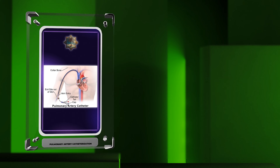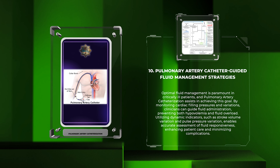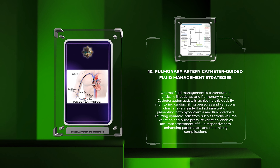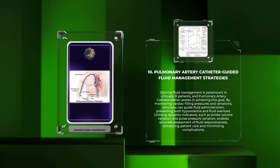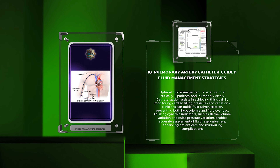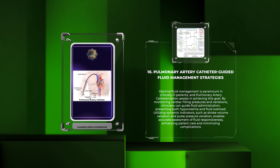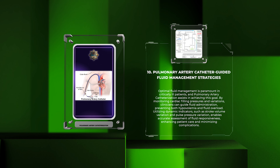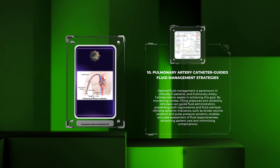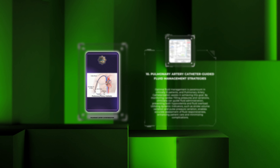Optimal fluid management is paramount in critically ill patients, and pulmonary artery catheterization assists in achieving this goal. By monitoring cardiac filling pressures and variations, clinicians can guide fluid administration, preventing both hypovolemia and fluid overload. Utilizing dynamic indicators such as stroke volume variation and pulse pressure variation enables accurate assessment of fluid responsiveness, enhancing patient care and minimizing complications.